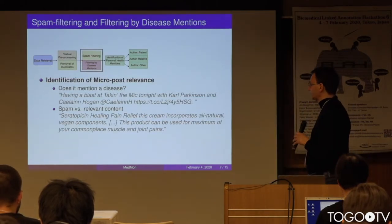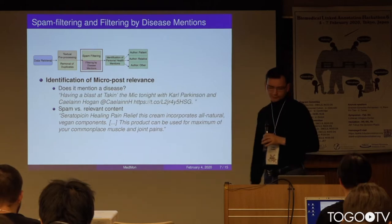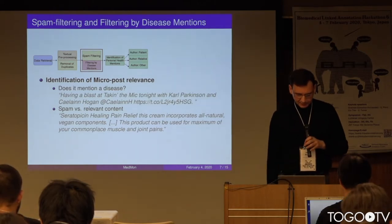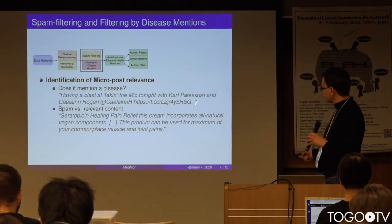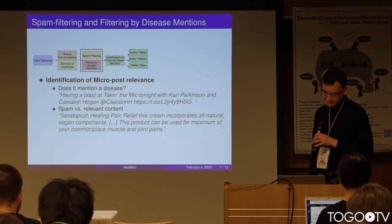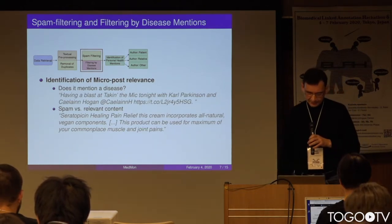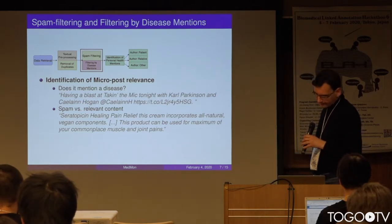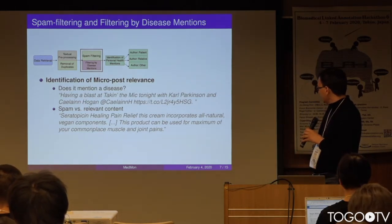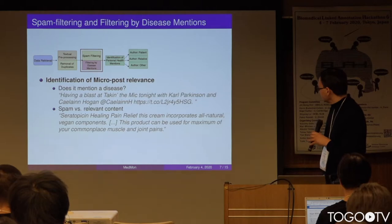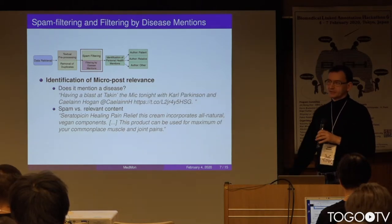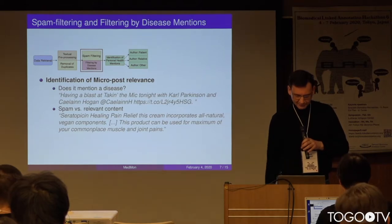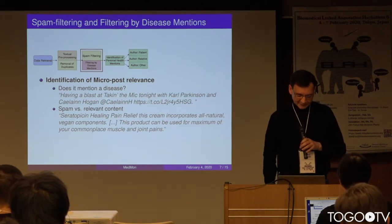Then we need to identify the relevance of these micro-posts. For example, does the tweet actually mention a disease? One example mentions Parkinson's but it's probably not about the disease. Another has joint pains but it's probably just spam — somebody trying to advertise a product.